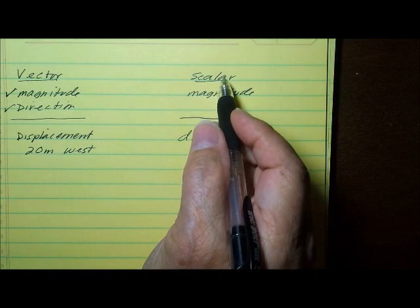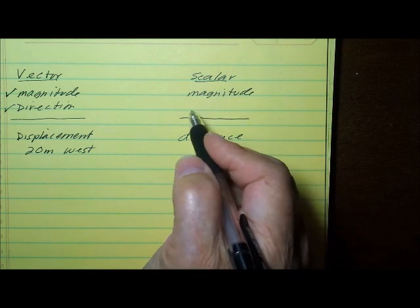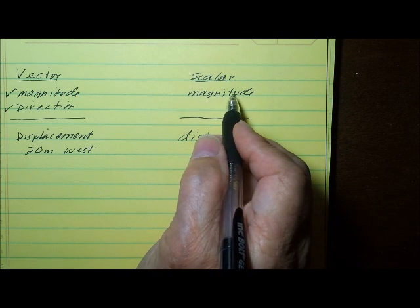A scalar measurement, on the other hand, has no direction. All it has is a magnitude or an amount.